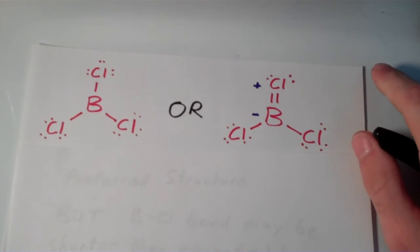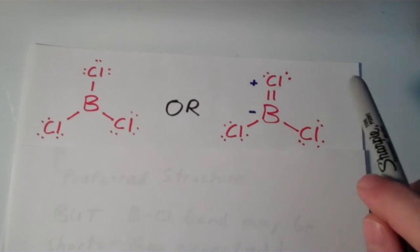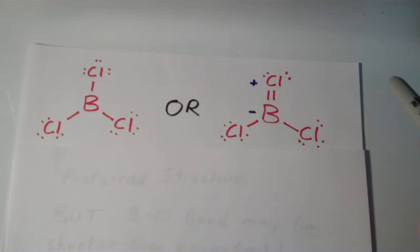So that brings us with a dilemma. Do we incomplete the octet but then have all the formal charges satisfied, or do we complete the octet and give an electronegative atom a formal positive charge? And this question is not very easily answered.